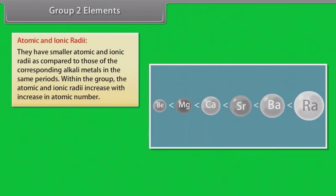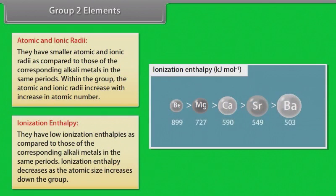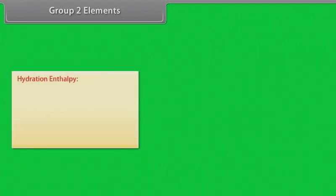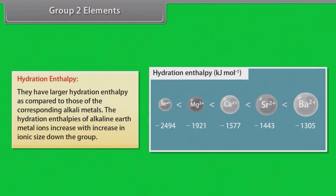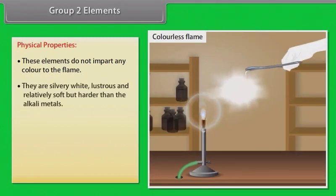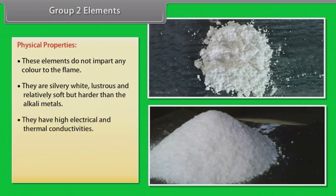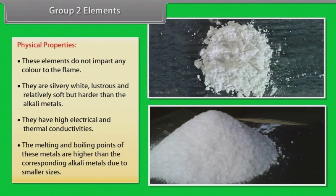Ionization enthalpy: They have low ionization enthalpies as compared to those of the corresponding alkali metals in the same periods. Ionization enthalpy decreases as the atomic size increases down the group. Hydration enthalpy: They have larger hydration enthalpy as compared to those of the corresponding alkali metals. The hydration enthalpies of alkaline earth metal ions increase with increase in ionic size down the group. Physical properties: These elements do not impart any color to the flame. They are silvery white, lustrous and relatively soft but harder than the alkali metals. They have high electrical and thermal conductivities. The melting and boiling points of these metals are higher than the corresponding alkali metals due to smaller sizes.